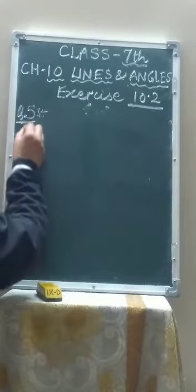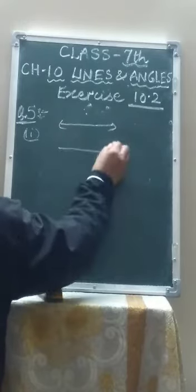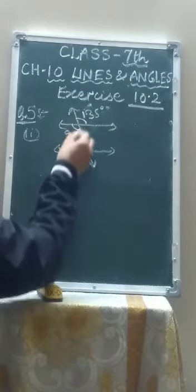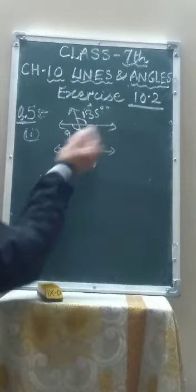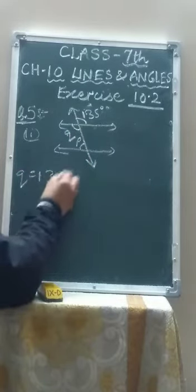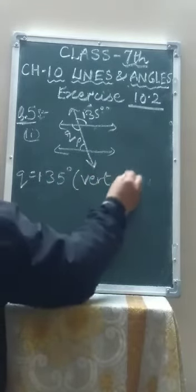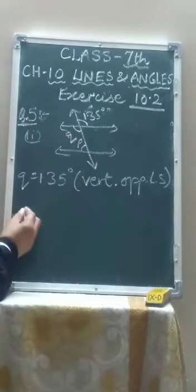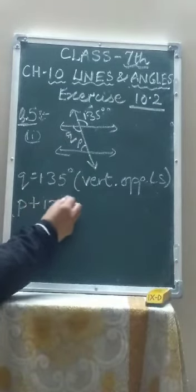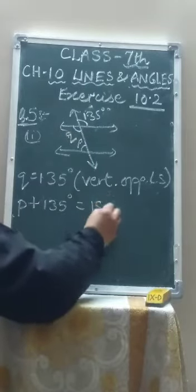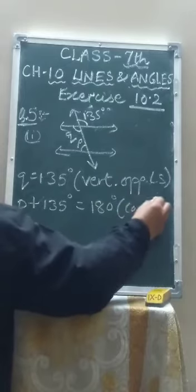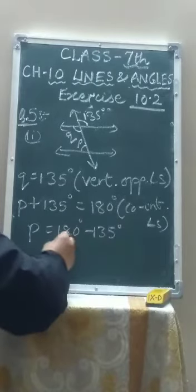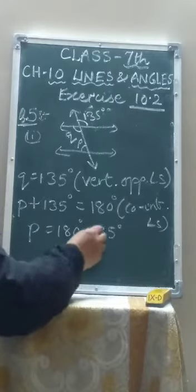Now second part of question number 5. These two are parallel lines and the transversal is cutting them. This angle is 135 degrees. Q and 135 degrees are vertically opposite angles, so Q equals 135 degrees because vertically opposite angles are equal. And Q and P are co-interior angles, so P plus 135 degrees equals 180 degrees. Therefore P equals 180 minus 135, which is 45 degrees.